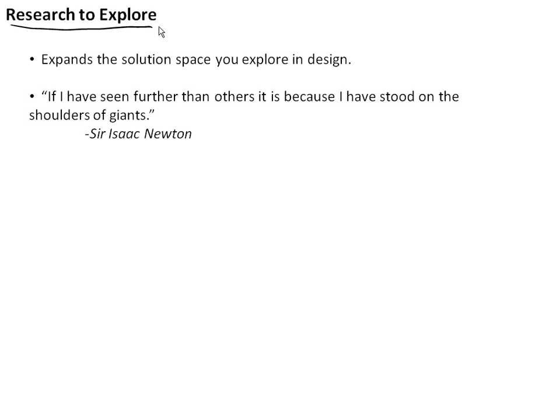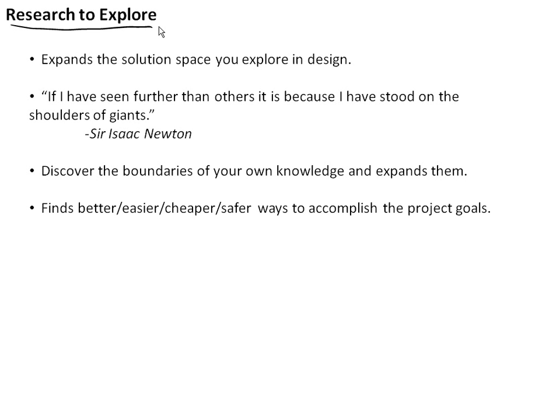Now I want to briefly talk about two different types of research. The first type is probably what you think of when you hear the word research: research to explore something. This essentially means finding out new information, which expands the solution space in your design problem. By doing research, you learn about things you didn't know before, allowing more divergent thinking. It also lets you build off the work of others. As Isaac Newton said, 'If I have seen further than others, it is because I have stood on the shoulders of giants.' Research is the way you stand on those shoulders. Research helps you discover the boundaries of your own knowledge and expands them. It helps you find better, easier, cheaper, safer ways to accomplish your project goals.